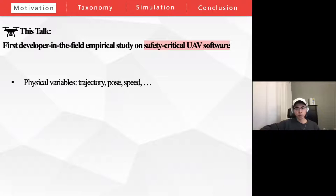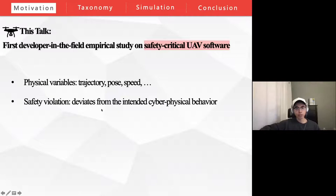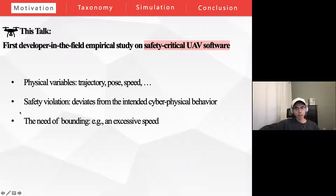We focus on physical variables such as the UAV's trajectory, pulse, and speed, which are the UAV parameters reflecting their cyber-physical nature. They are closely connected to UAV safety in the sense that UAVs are cyber-physical systems interacting with the physical world. Any behavior that deviates from the intended cyber-physical behavior is considered a safety violation. The need to bond these physical variables within a reasonable range is self-evident — for example, an excessively high speed will be a risk for the UAV, and more critically, a risk for public safety.